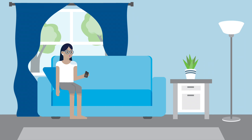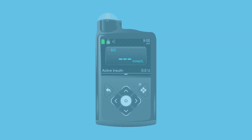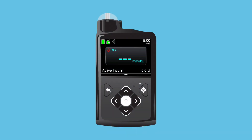After a few days on pump therapy, Tina has noticed her blood glucose values have improved but are still a bit high during the day. Her health care professional advises her to increase her basal rate from 0.75 to 0.9 units per hour between 8 a.m. and 6 p.m.